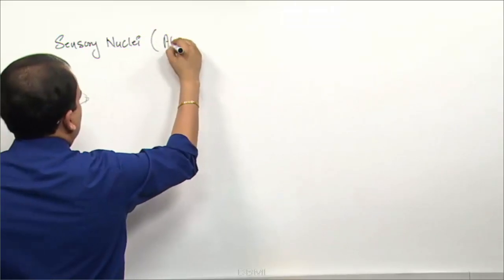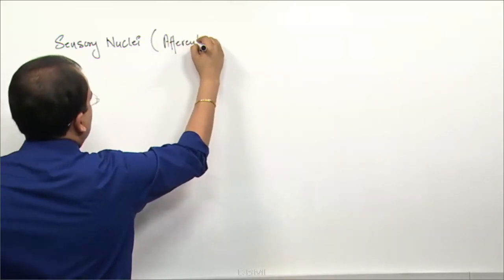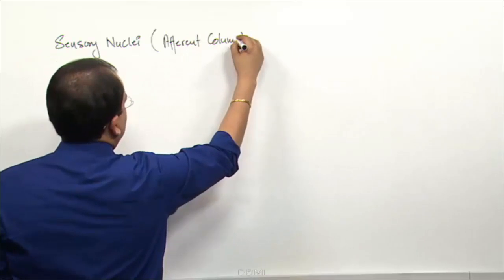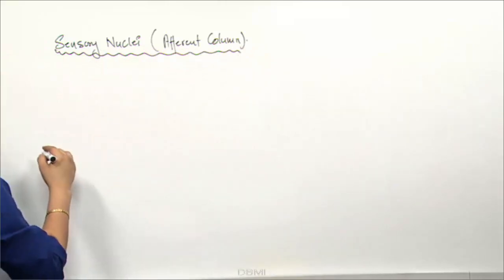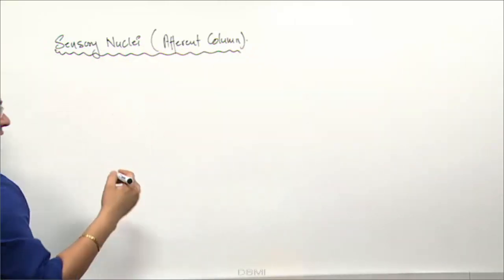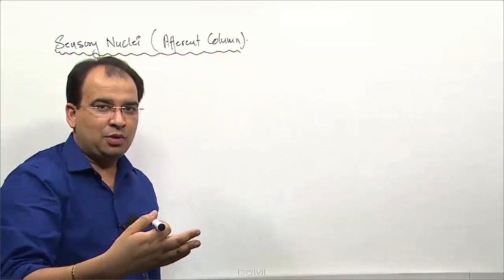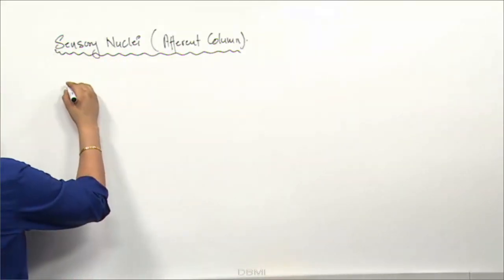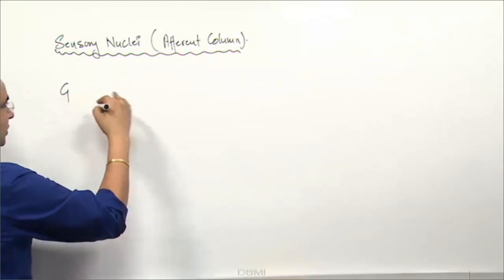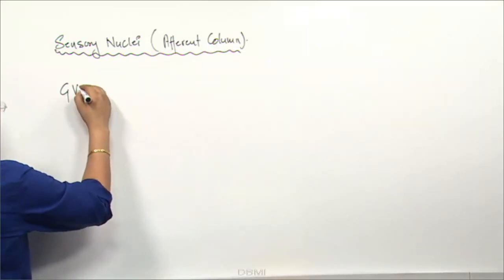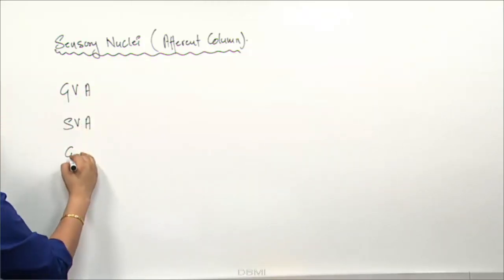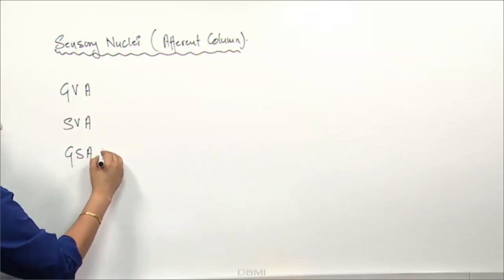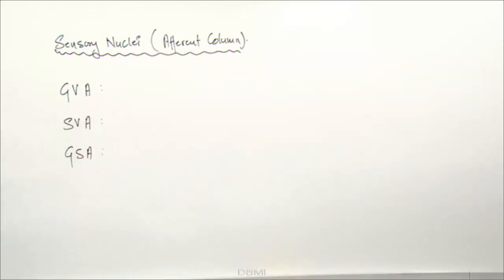Sensory nuclei, that is the afferent column, are present in the afferent column. We have the corresponding afferent column - now whatever efferent column you had, we have the corresponding afferent column. If you remember there was general visceral efferent, so there will be a general visceral afferent, special visceral afferent, and general somatic afferent. These are the corresponding afferent columns: GVA, SVA, and GSA.